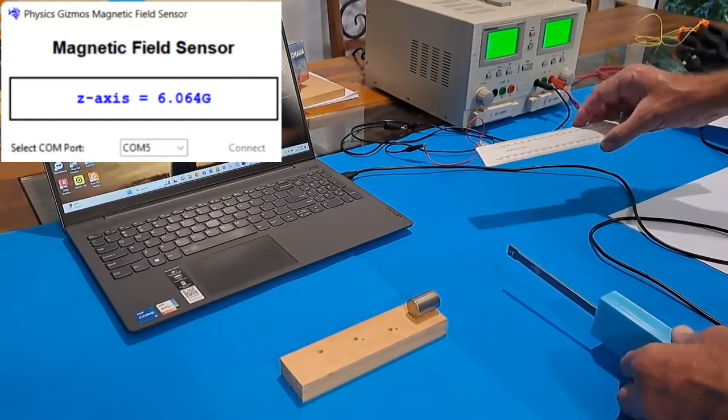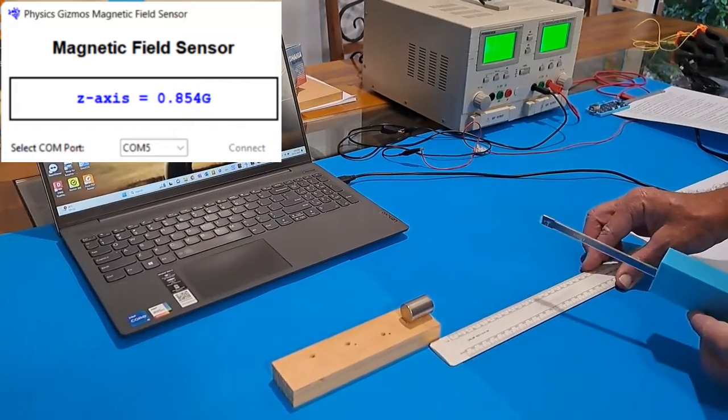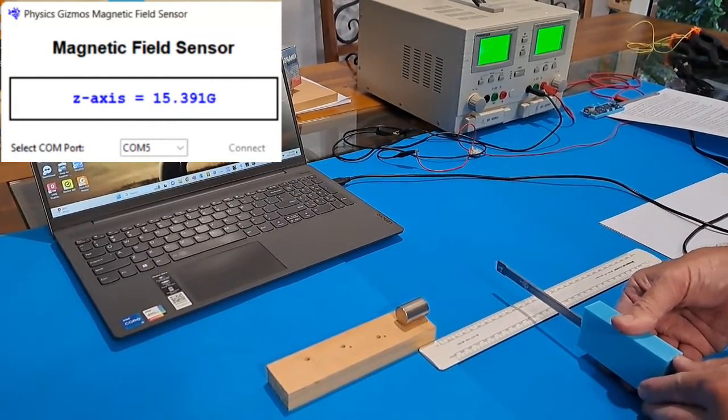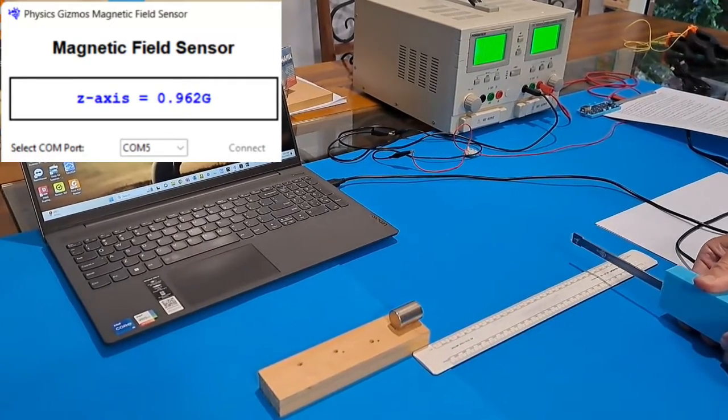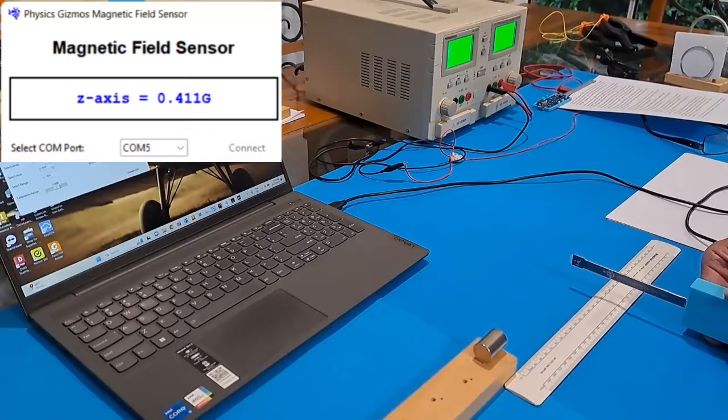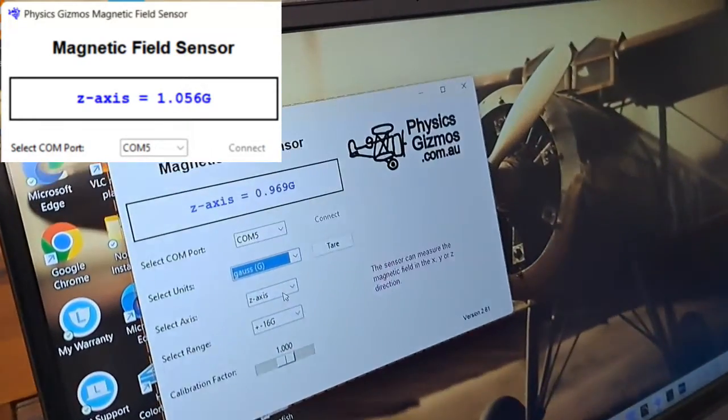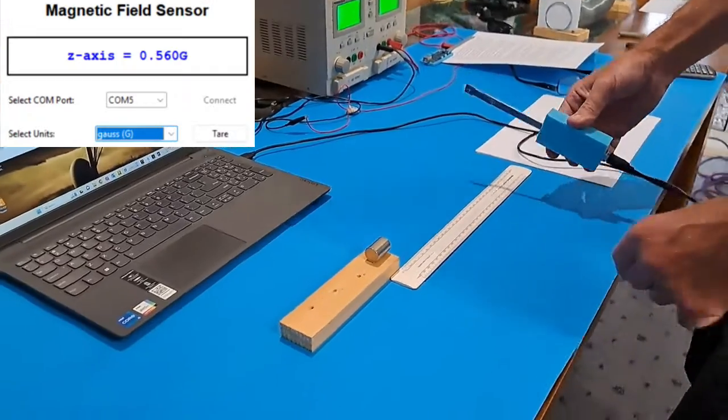Nevertheless, there's an experiment right there. If a student wanted to do a student experiment, they could use this and look at how the magnetic field strength changes as the distance from the magnet varies. So straightaway, that's a nice easy experiment that somebody could do.